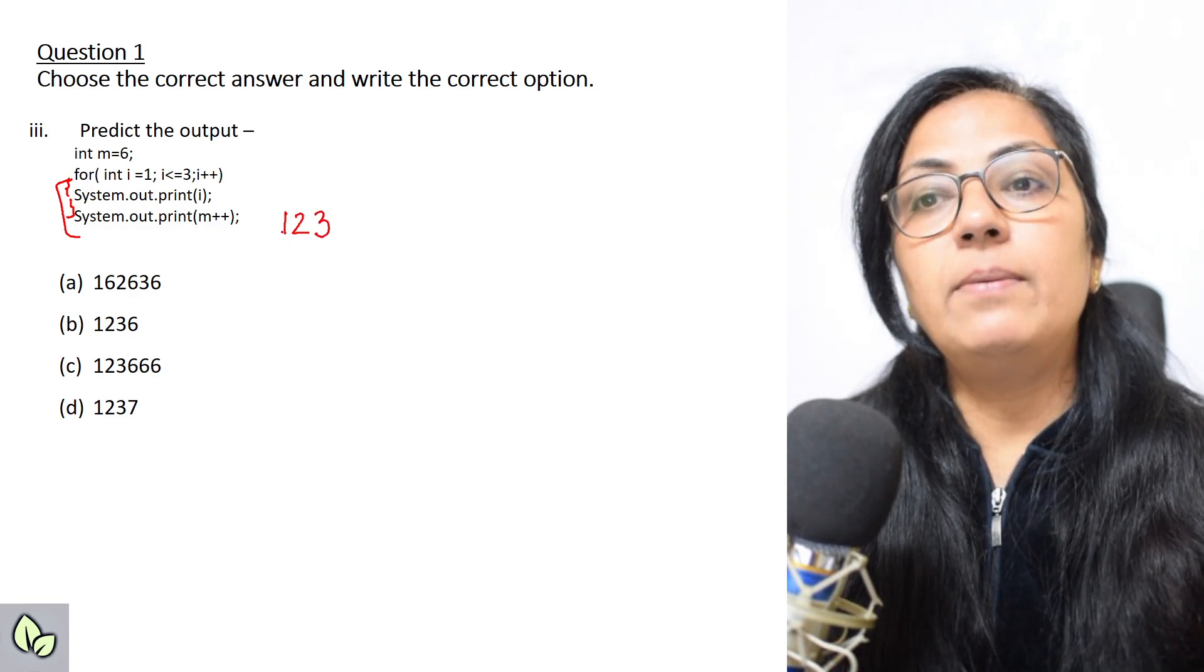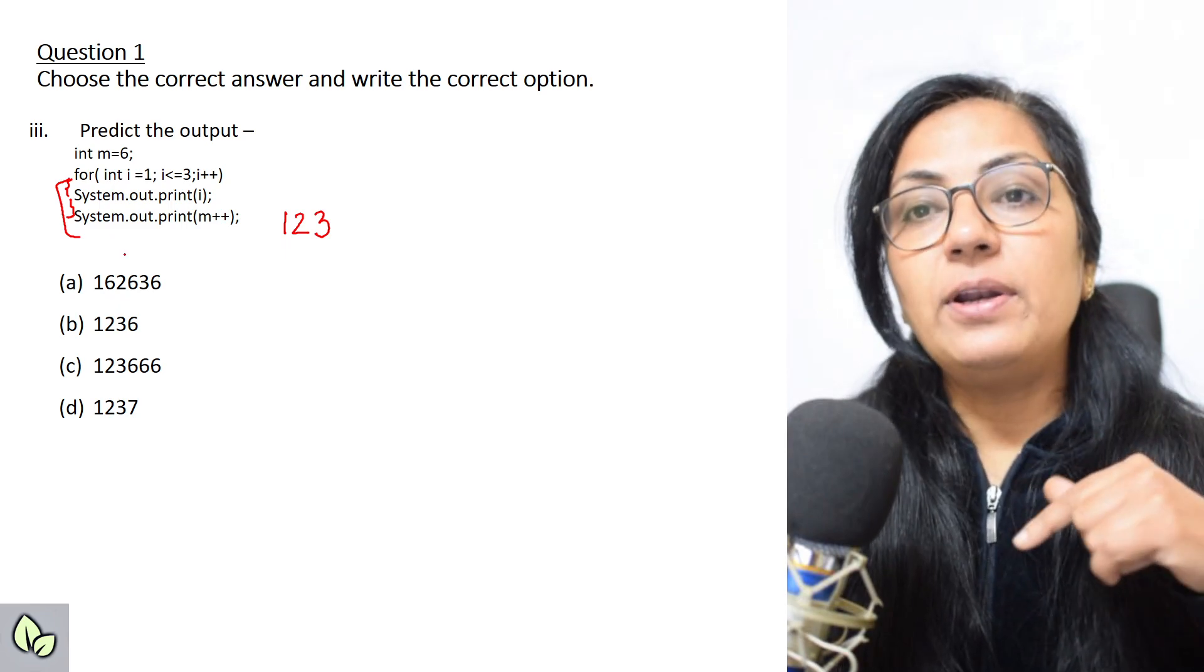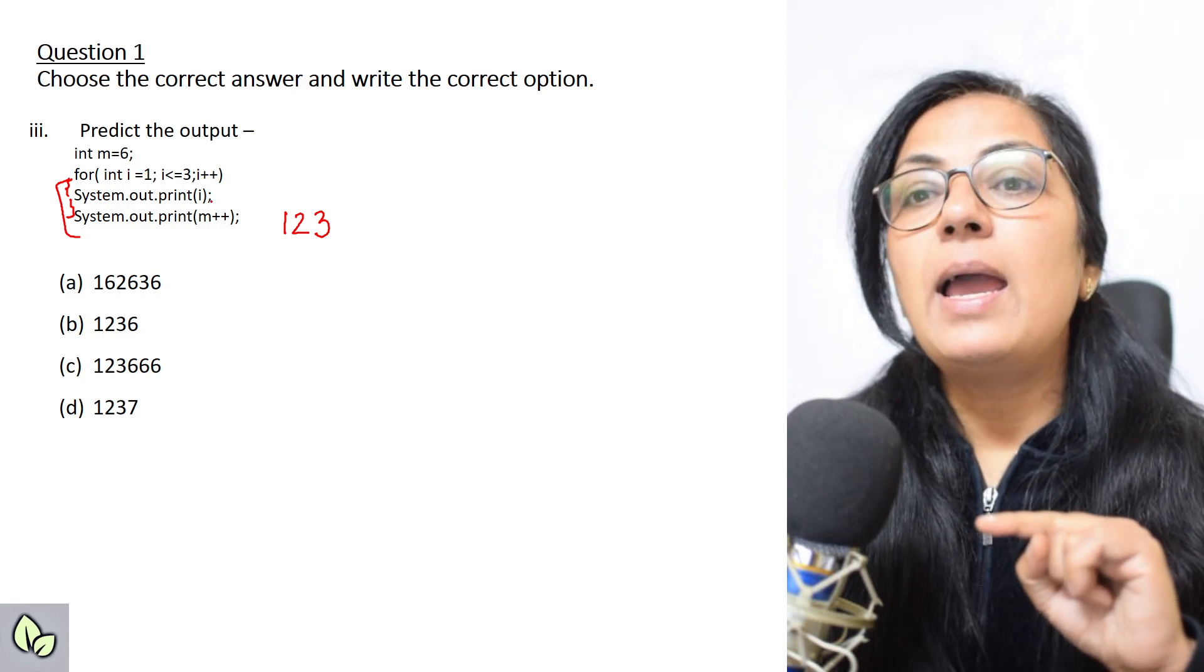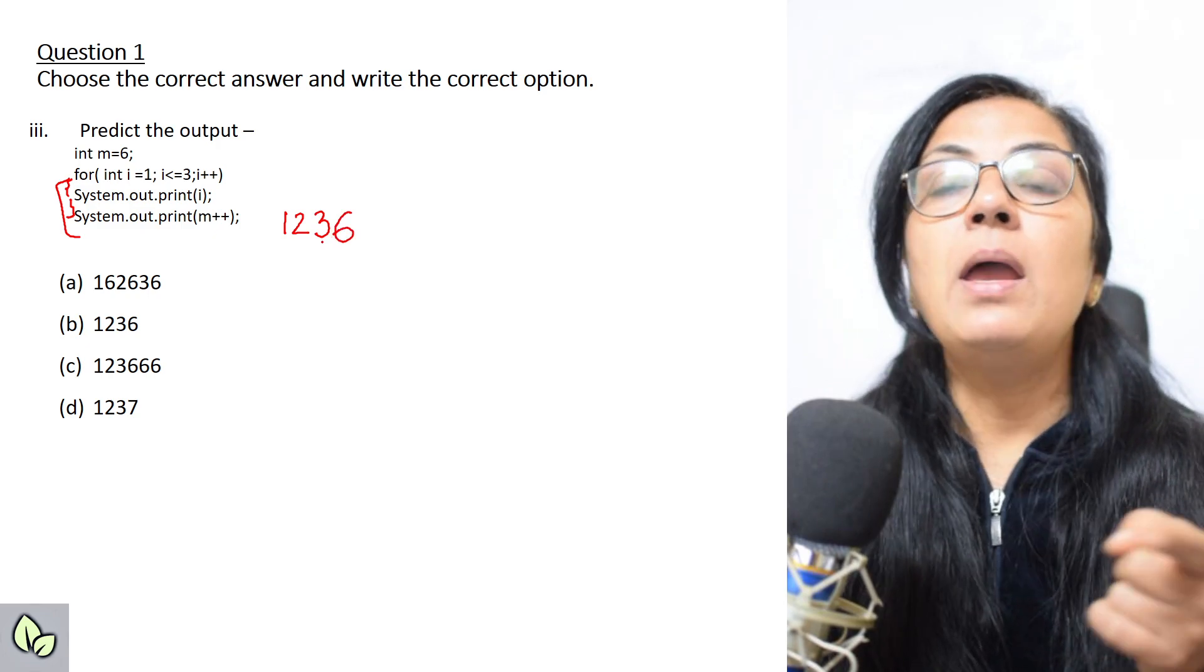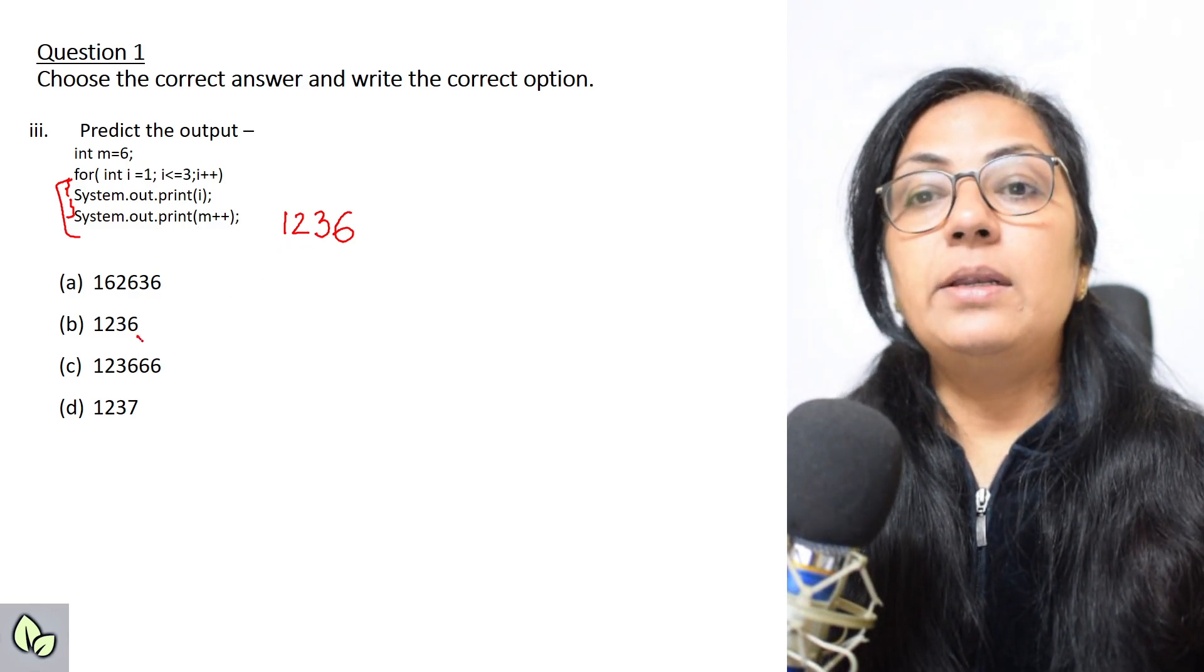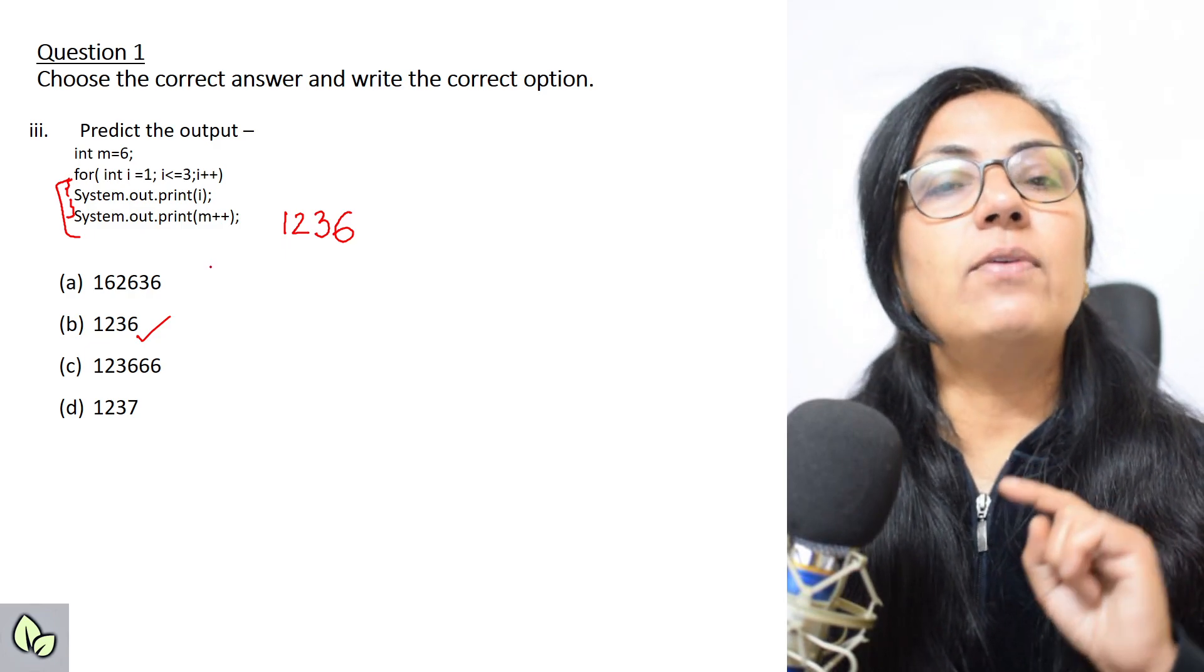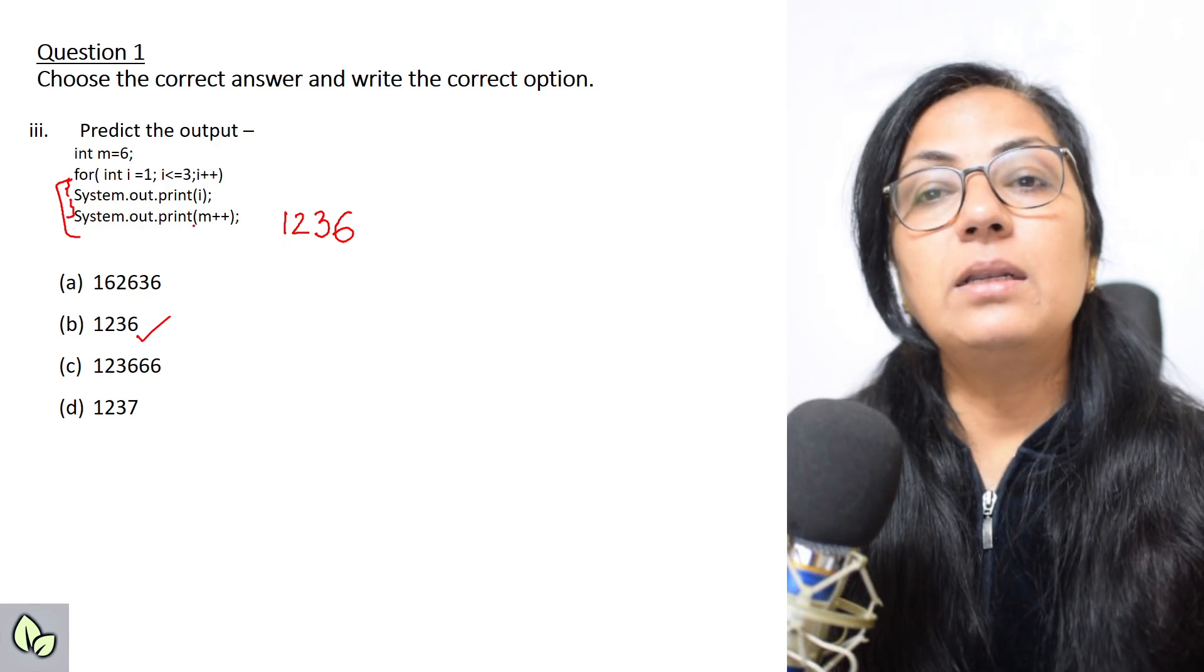So for int i equals 1, print i will print 1, then i plus plus becomes 2, then 3. In the loop, 1, 2, 3 will be printed. The last statement will come after completion of the loop only. After that, print m plus plus. M's value is 6, and m plus plus is post increment, so first it will print the present value of m, then the value will be incremented. So the output will be 1, 2, 3, 6. Please dry run the predict the output questions yourself first, then check whether that option is present.